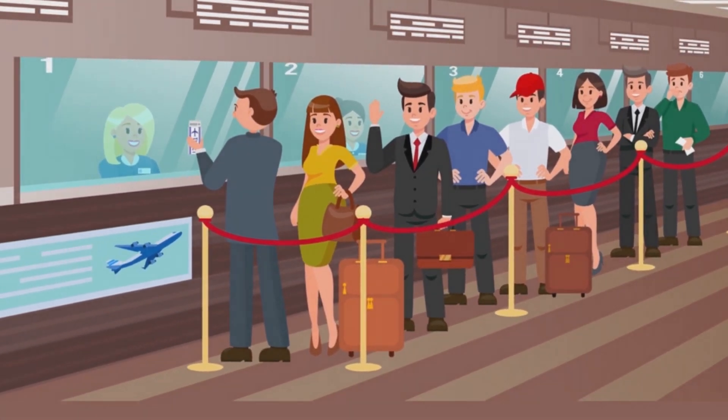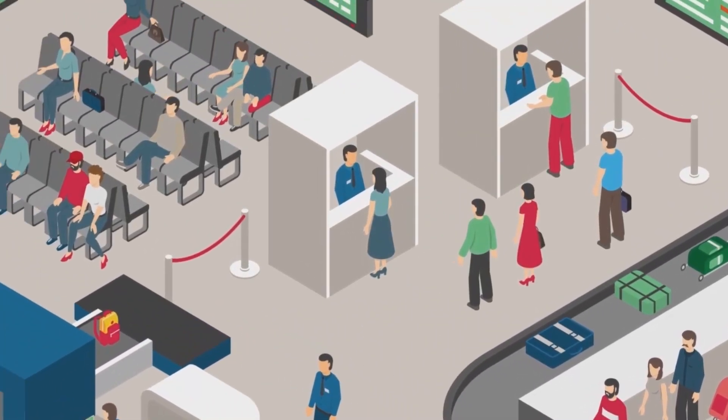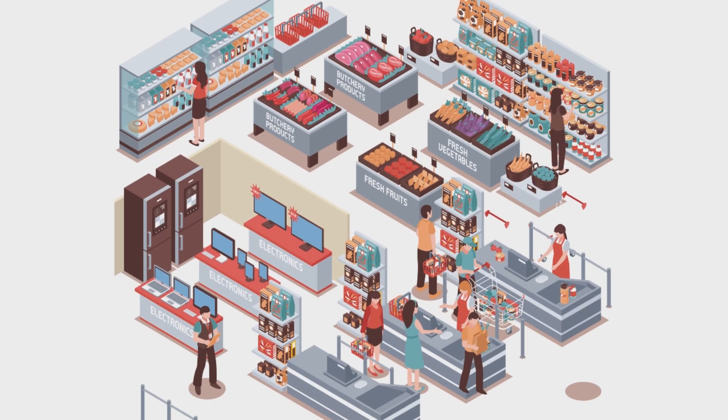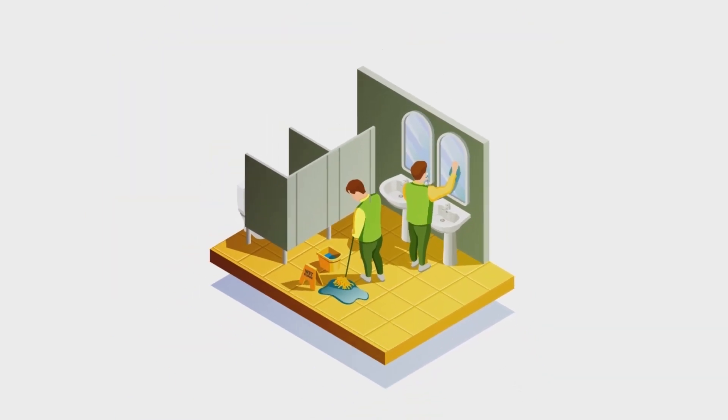All possible areas like boarding pass queues, security clearance queues, waiting areas, luggage belts, retail shops, escalators, and washrooms, where overcrowding is likely to happen, will be monitored automatically.